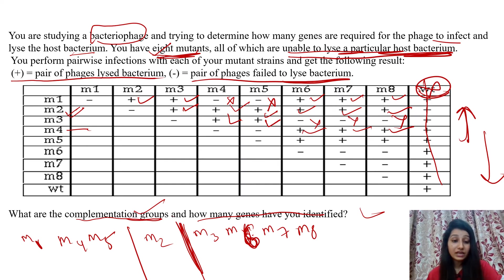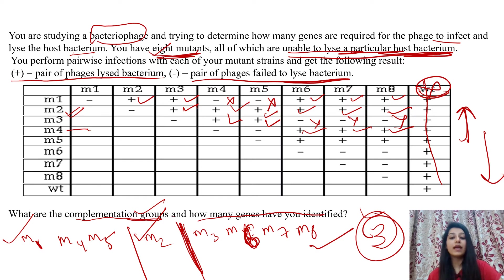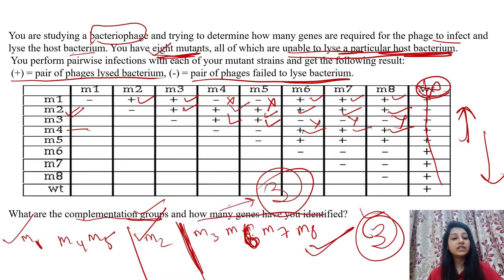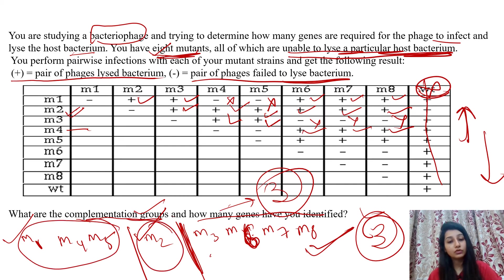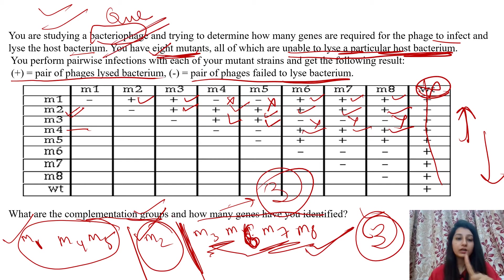From this analysis we conclude there are three complementation groups. The first contains M1, M4, and M5. The second contains M2. The third contains M3, M6, M7, and M8. This also tells us that three genes are involved — the first gene is mutated in M1, M4, M5; the second gene is mutated in M2; and the third gene is mutated in M3, M6, M7, and M8.